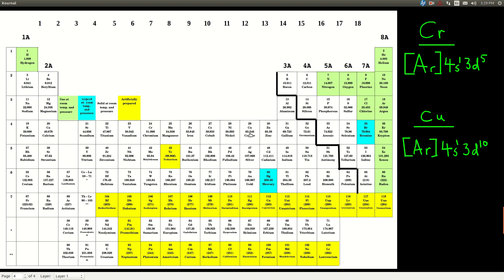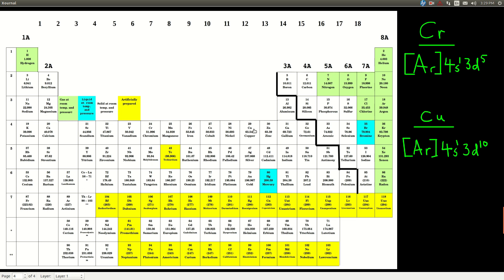and copper, likewise, okay, instead of being 4S2, 3D9, 1, 2, 3, 4, 5, 6, 7, 8, 9, it's argon, 4S1, 3D10. Basically, the reason for these is it's just more stable. It's easier for them to be like this than the other way, but pretty much just memorize these. So at this point,